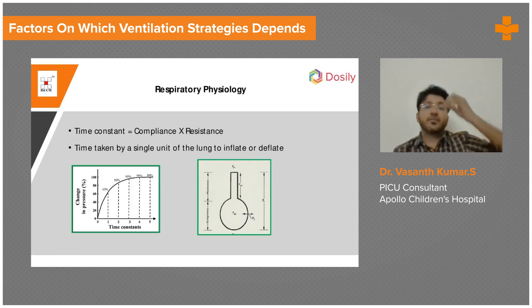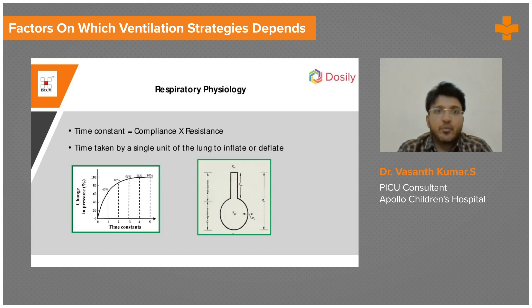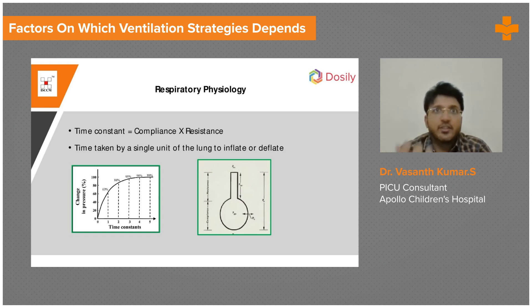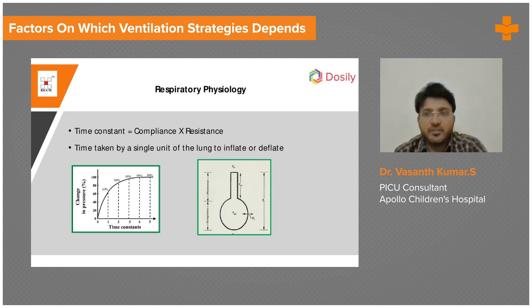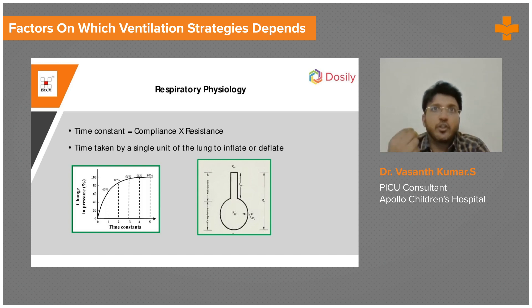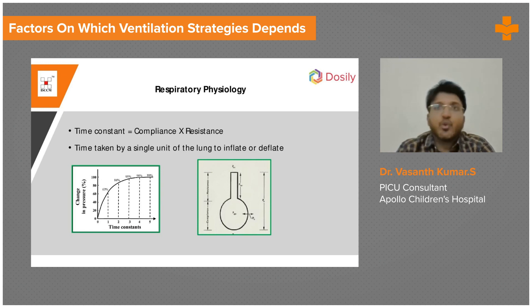The most important concept to remember is the time constant. The time constant formula is compliance multiplied by resistance. If lung compliance is good, the lung is functioning well. The compliance formula is change in volume per unit change in pressure — if volume improves with a minor change in pressure, it is a very compliant lung. If there is little change in volume despite a large change in pressure, it is a poorly compliant lung. The time constant is compliance into resistance.